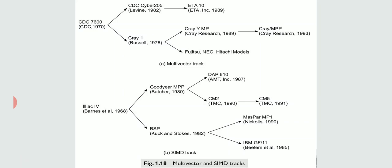The fourth track is Single Instruction Multiple Data — SIMD. This started with ILLIAC 4 SIMD computer. It had two development lines: the Goodyear MPP line and the BSP line. On the Goodyear side we have DAP 610, CM2, and CM5. On the BSP track we have MasPar MP1 and IBM GF11. These are some of the works done with SIMD tracks.